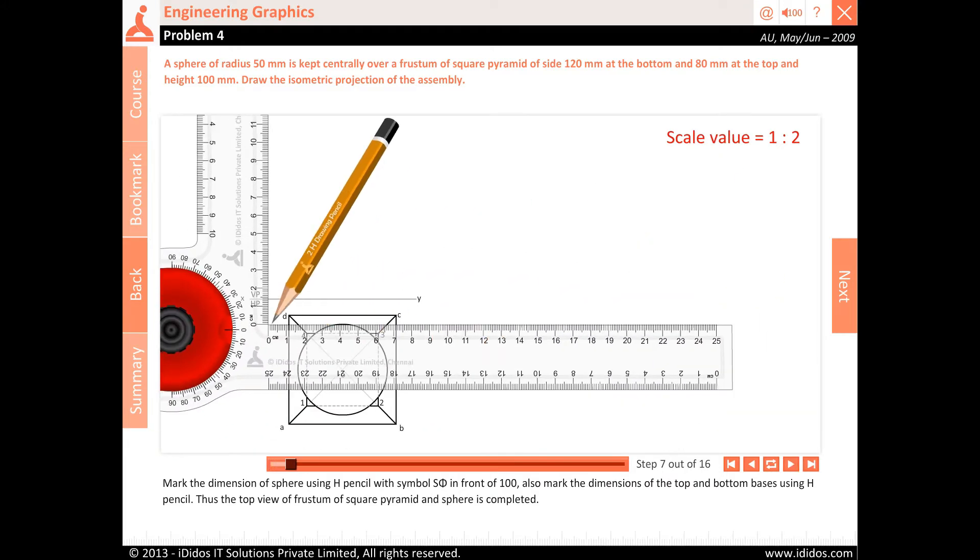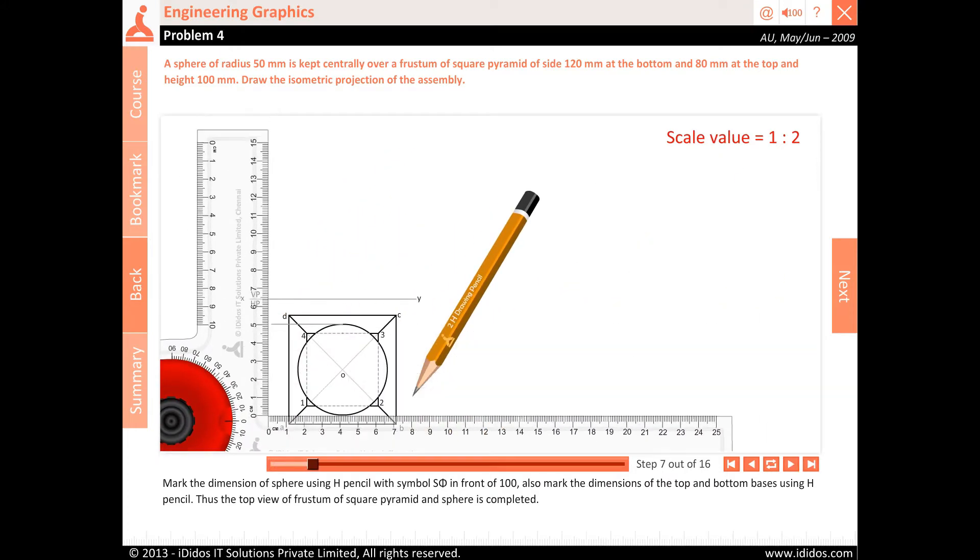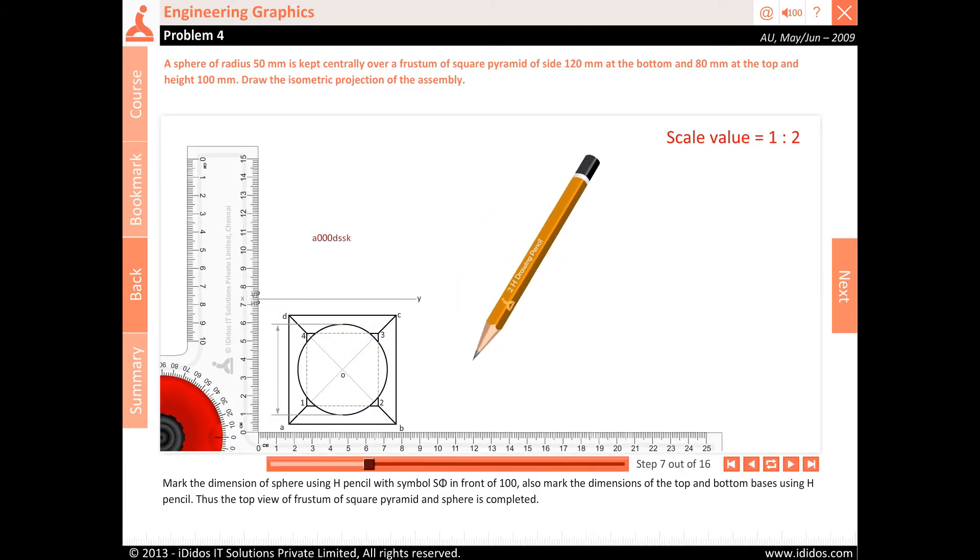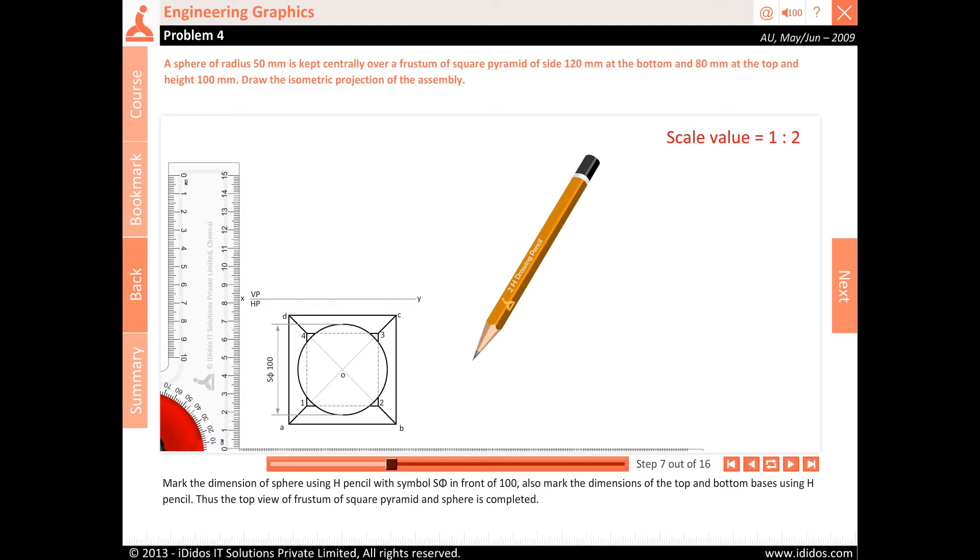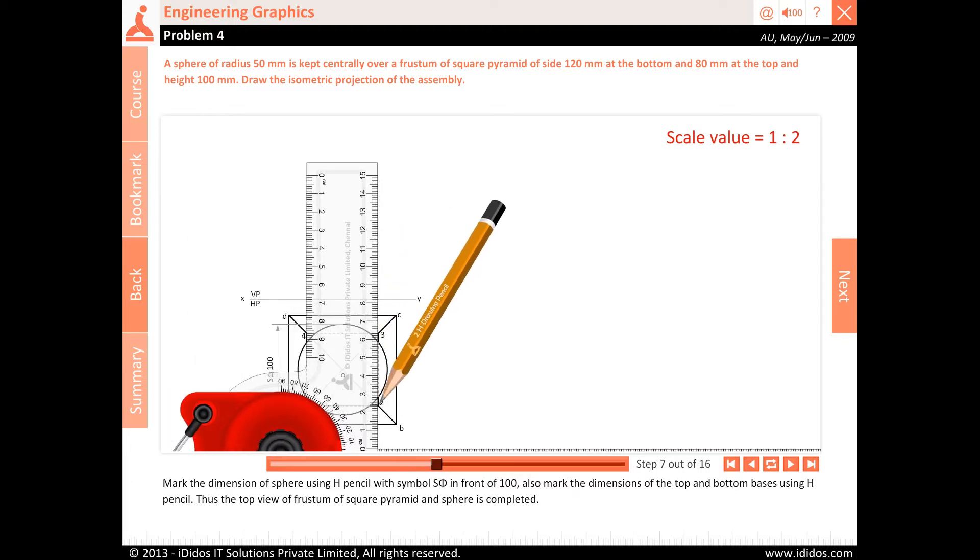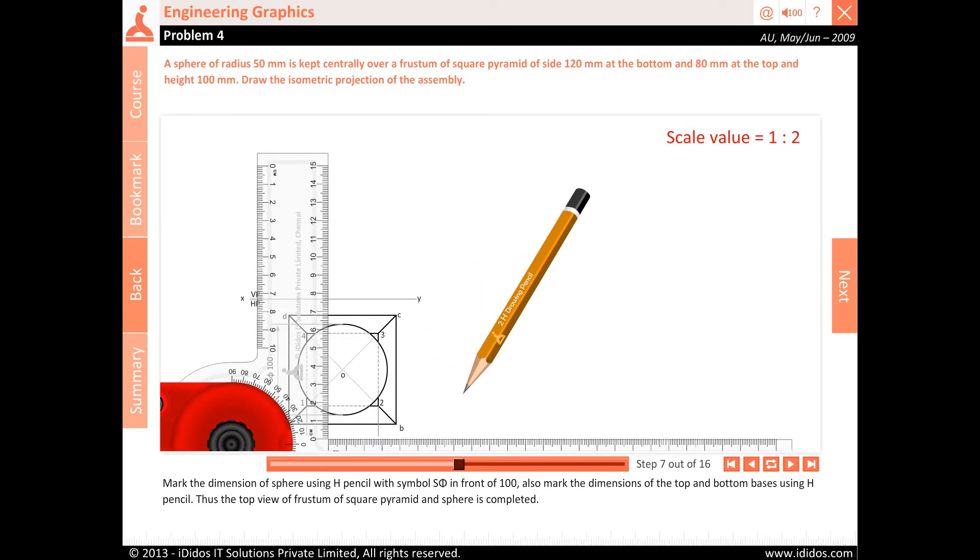Mark the dimension of sphere using H pencil with symbol S pi in front of 100. Also mark the dimensions of the top and bottom bases using H pencil. Thus, the top view of frustum of square pyramid and sphere is completed.